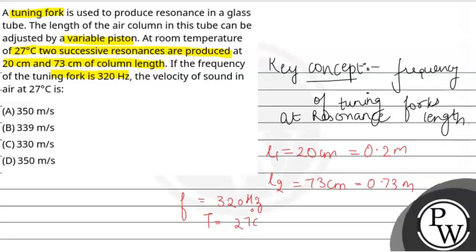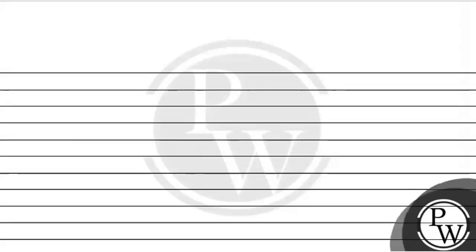So in this question, let's take a look at the velocity of the sound in air at 27 degrees Celsius. The velocity formula is V equals 2 into F times L2 minus L1, where L1 is the length of first resonance and L2 is the length of second resonance.